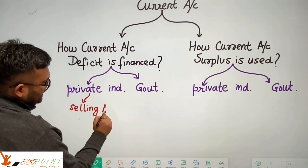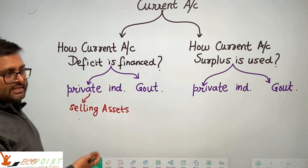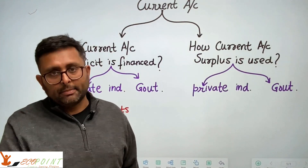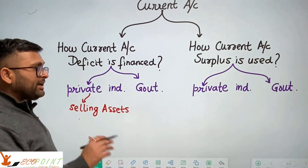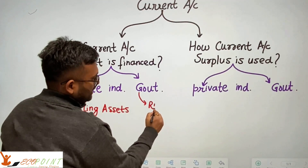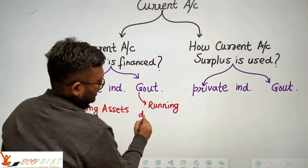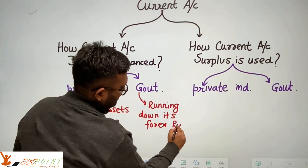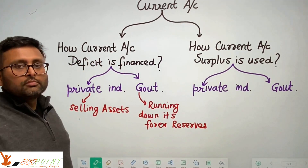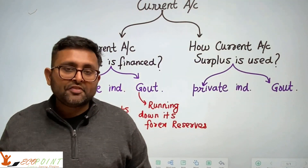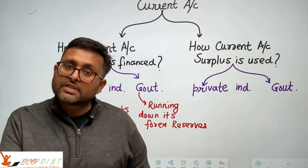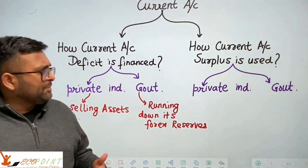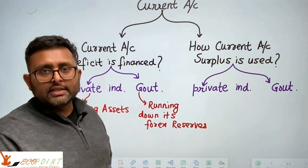Private individuals can finance the deficit by selling assets. As for the government, it has some foreign exchange reserves. If there is a deficit, the government can finance this deficit by depleting its foreign exchange reserves — running down its forex reserves. It will be selling the foreign currency it has in the forex market.